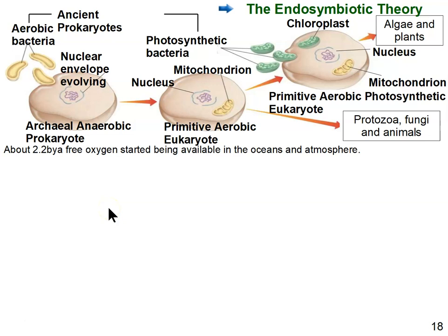That drove the event known as endosymbiosis. The endosymbiotic theory tries to explain, through inference, where eukaryotic cells came from. The first living things were prokaryotic cells, bacteria that don't have a nucleus, and then we see the appearance of eukaryotic cells. We think prokaryotic cells came together through endosymbiosis to give rise to eukaryotic cells.